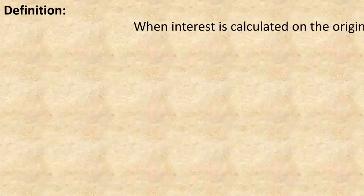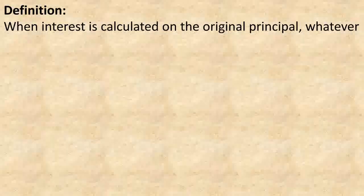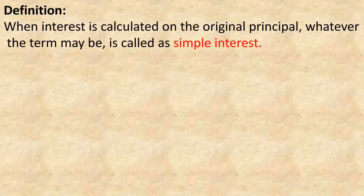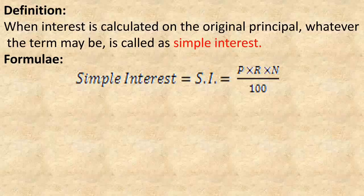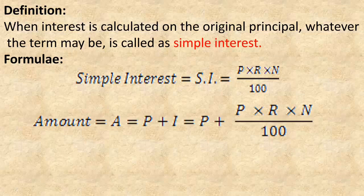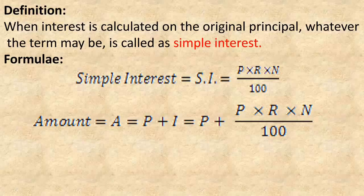Definition: When interest is calculated on the original principal, whatever the term may be, it is called simple interest. Formula: Simple interest SI = P × R × N / 100. Amount A = P + I = P + (P × R × N / 100).